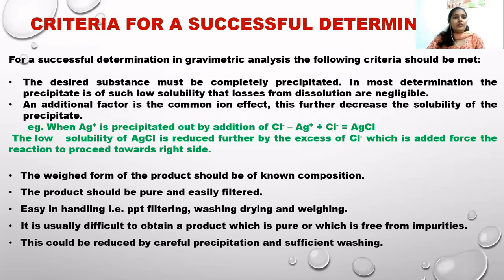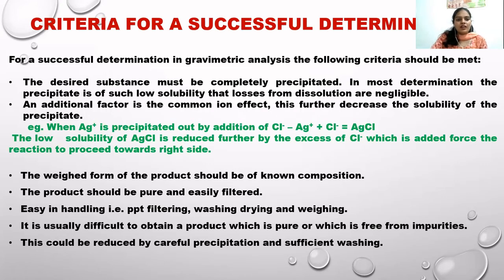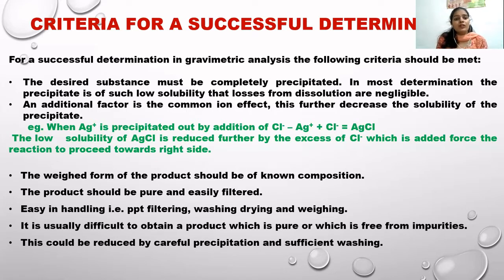Here we'll discuss the criteria for a successful determination in gravimetric analysis. First, the desired substance must be completely precipitated. In most determinations, the precipitate has such low solubility that losses from dissolution are negligible. An additional factor is the common ion effect — we can use a common ion to shift the equilibrium to the right-hand side where the precipitate is formed.